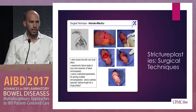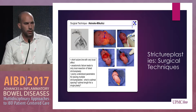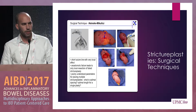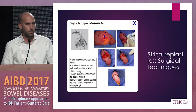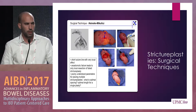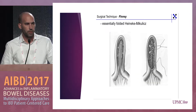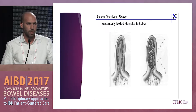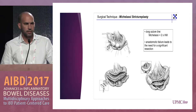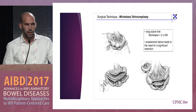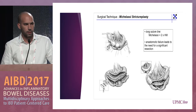The types of strictureplasties are basically defined based upon the length of the stricture itself, which defines which technique we perform. The first is the Heineke-Mikulicz, which is done for short strictures — you open the bowel in a longitudinal fashion and close in a transverse fashion. When you have medium-length strictures, we perform a Finney strictureplasty, which is essentially a folded Heineke-Mikulicz. For long segment strictures, we prefer the Michelassi technique, though this is not commonly performed anymore. One issue is that if you have an anastomotic failure, that leads to a highly significant loss of small bowel.